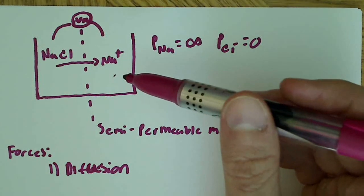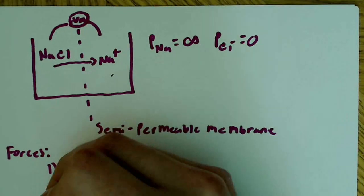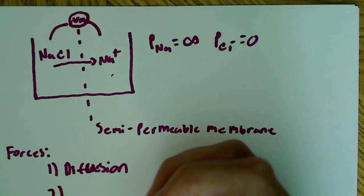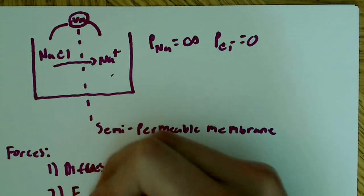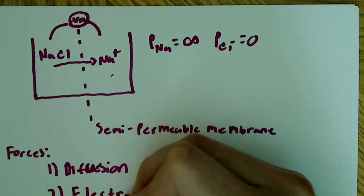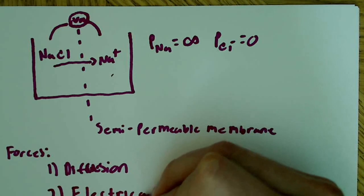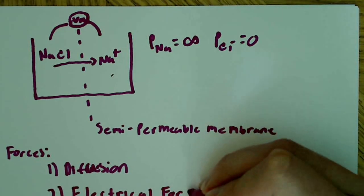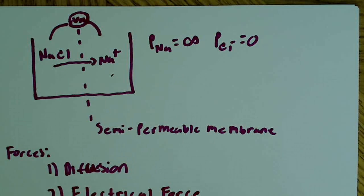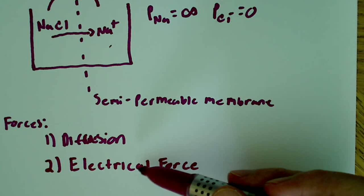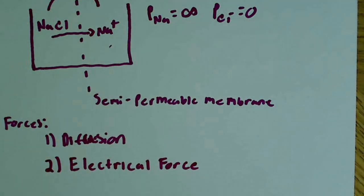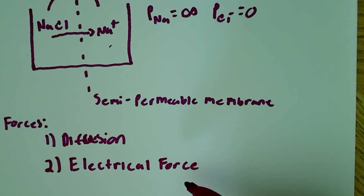So at some point, these two forces, the first one being diffusion and the second one being an electrical force. When these two forces balance, there's no net movement. And when these two forces balance, diffusion and this electrical force, when they balance, you're at resting membrane potential. So that's the story.